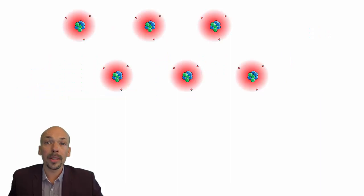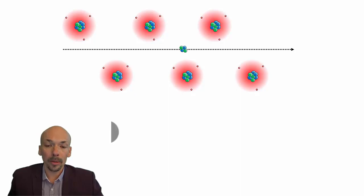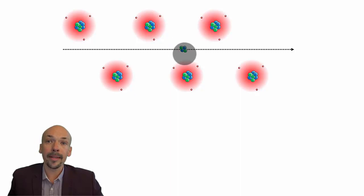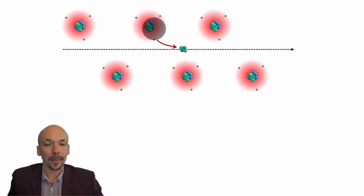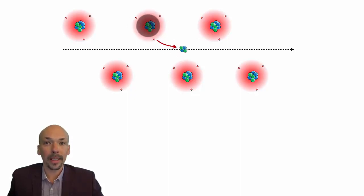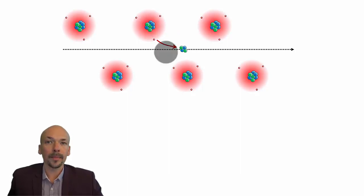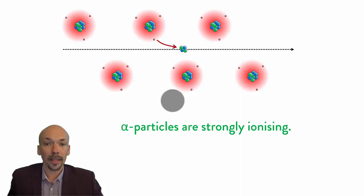Here we have a material consisting of different atoms and an alpha particle will go through it. This alpha particle has a positive charge of two and it would like to have two electrons. It doesn't have any on its own, but it can take some electrons away from other materials. When it goes through this material, it can steal an electron from an atom — that electron will start following the alpha particle and leave the atom, which will then be ionized. Therefore, alpha particles are strongly ionizing because they take away electrons easily.